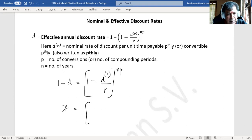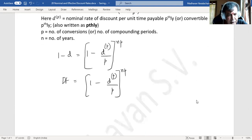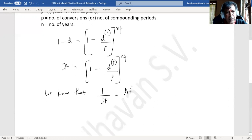So this 1 minus dp by p to the power of np—we also know that the reciprocal of the discount factor is nothing but the accumulation factor.